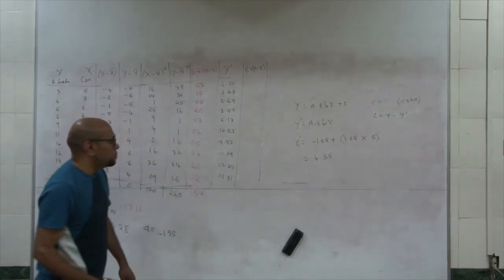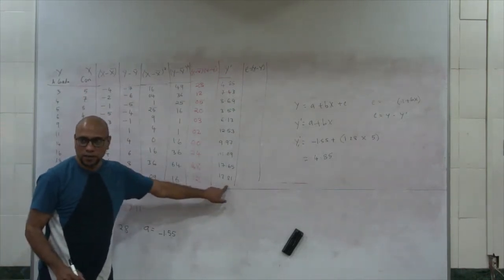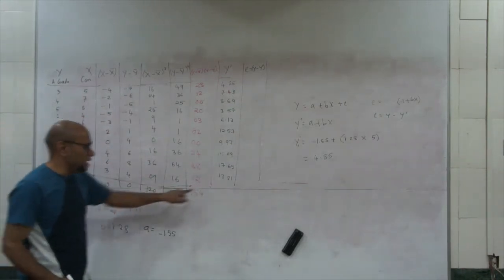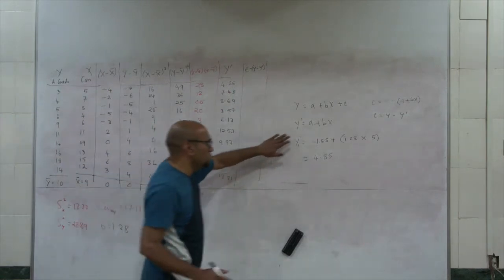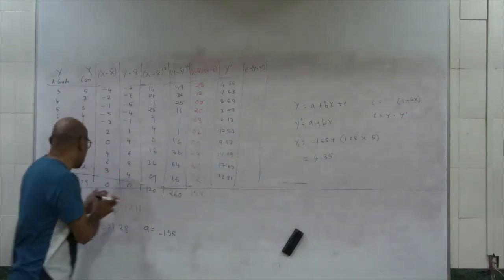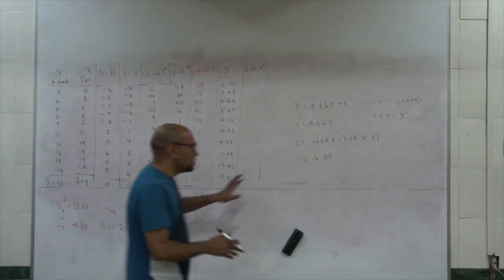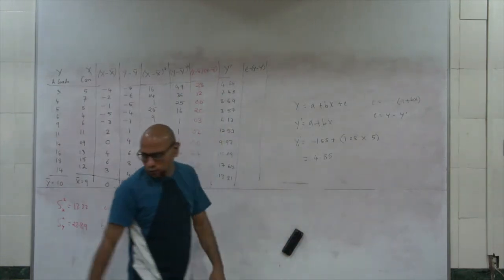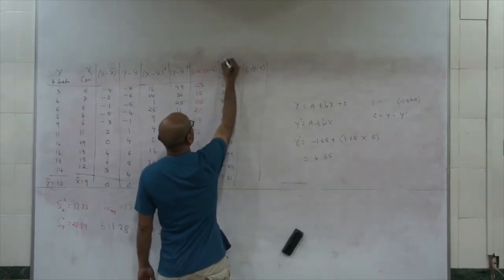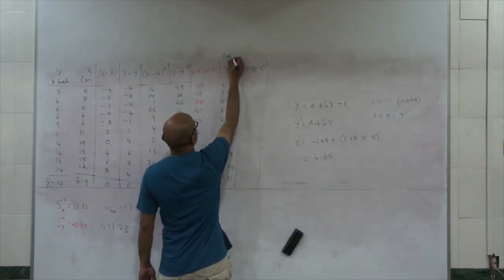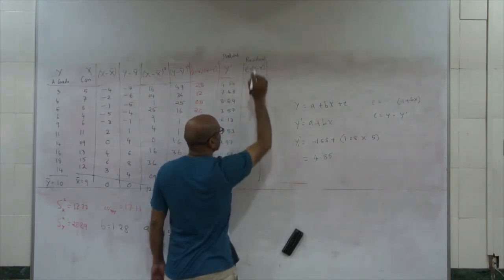These are the predicted values. For example, the actual value is 14, and the predicted value is 13.81. The difference between 14 and 13.81 is the error in the prediction — the error of the model. The model has gone pretty close to the actual value of y, but it can't be perfect. This difference is what we call the residual.